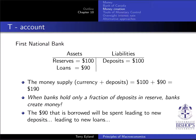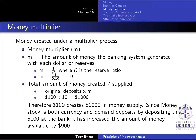The person who receives that ninety dollars — because it's spent in their shop or somewhere else — can deposit that amount in the bank. That new deposit will lead to more reserves and more loans, and so on, continuing the cycle.